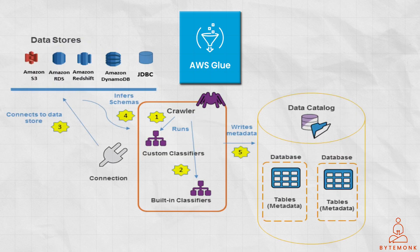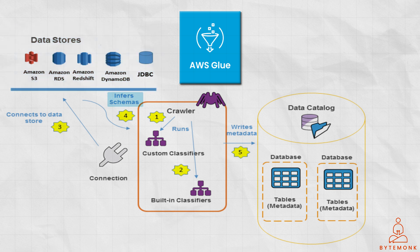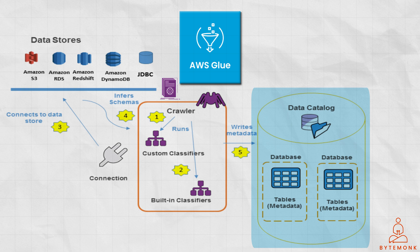Glue provides crawlers with automatic schema inference for your semi-structured and structured datasets. Crawlers automatically discover all your datasets, discover your file types, extract the schema, and store all this information in a centralized metadata catalog for later querying and analysis. Glue also automatically generates the scripts that you need to extract, transform and load your data from source to target, so you don't have to start from scratch.